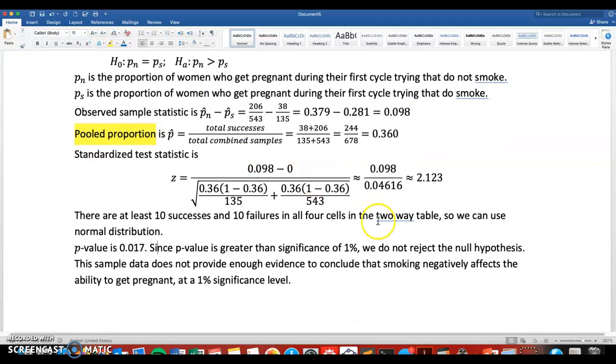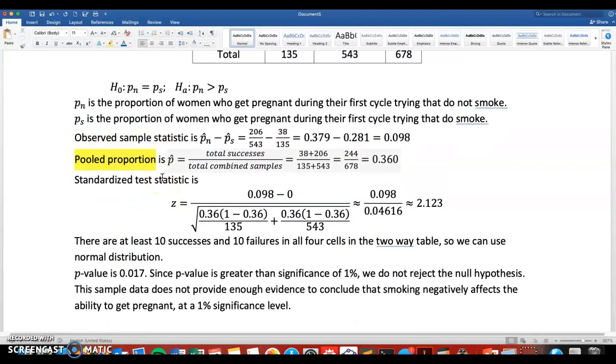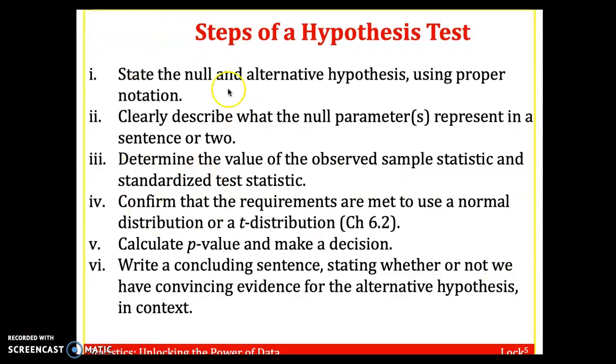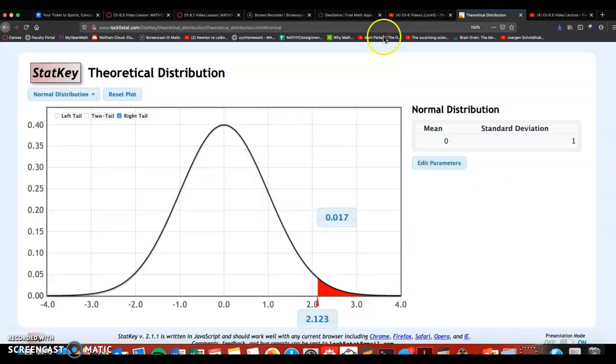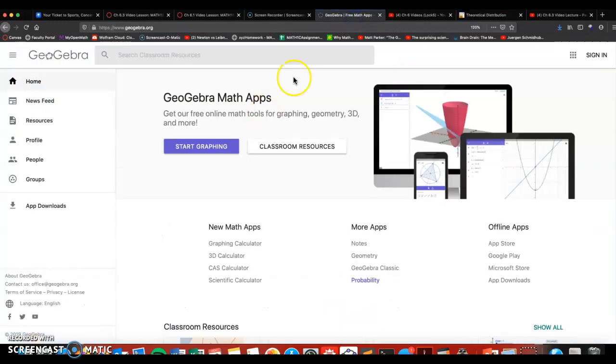Okay, so what I want to do, just for a couple minutes before we finish chapter 6.3, is talk about how you could use GeoGebra, the second software package we're using, to help get your sample statistic, standardized test statistic, and p-value. So it's a little bit of a shortcut. If you use the software, it helps with some of these, but it definitely does not describe the parameters, state hypothesis, and so on. So it's a good tool, and if you like using it, you could definitely use it throughout the rest of this class. So I'm going to go over to GeoGebra, click on that probability tab.